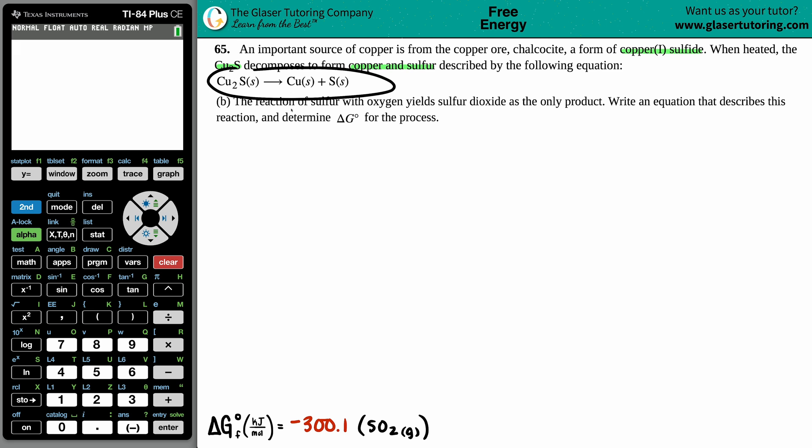Cu2S solid will yield copper solid plus sulfur solid. Now for letter b, it says the reaction of sulfur with oxygen yields sulfur dioxide as the only product. Write an equation that describes this reaction and then determine the delta G naught for the process.